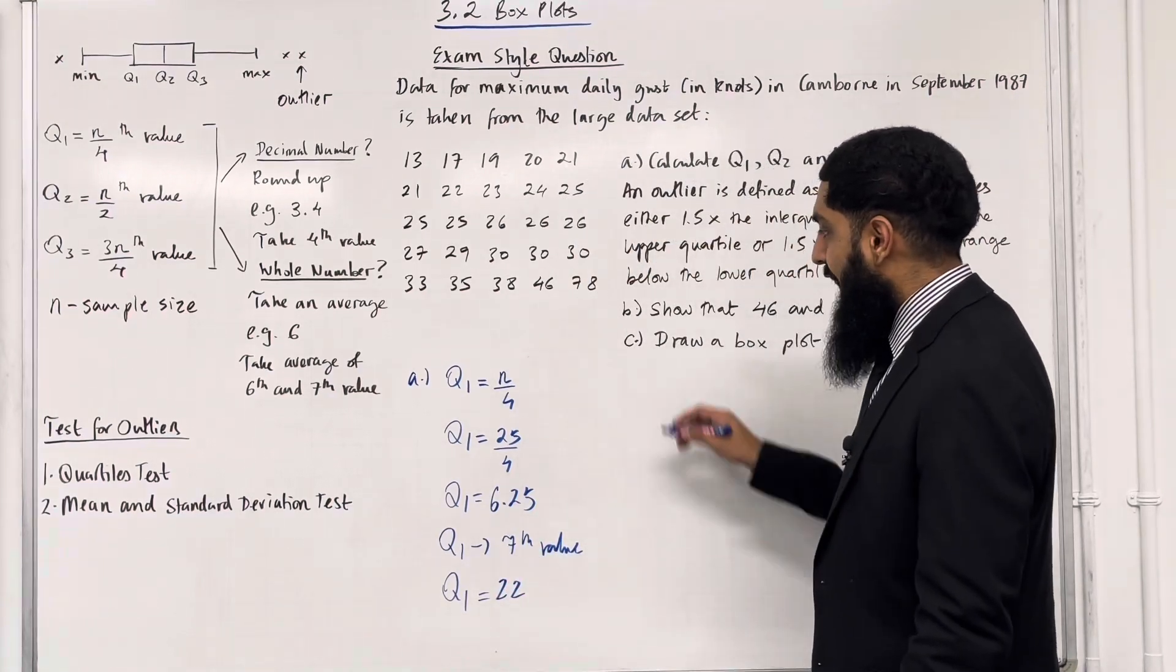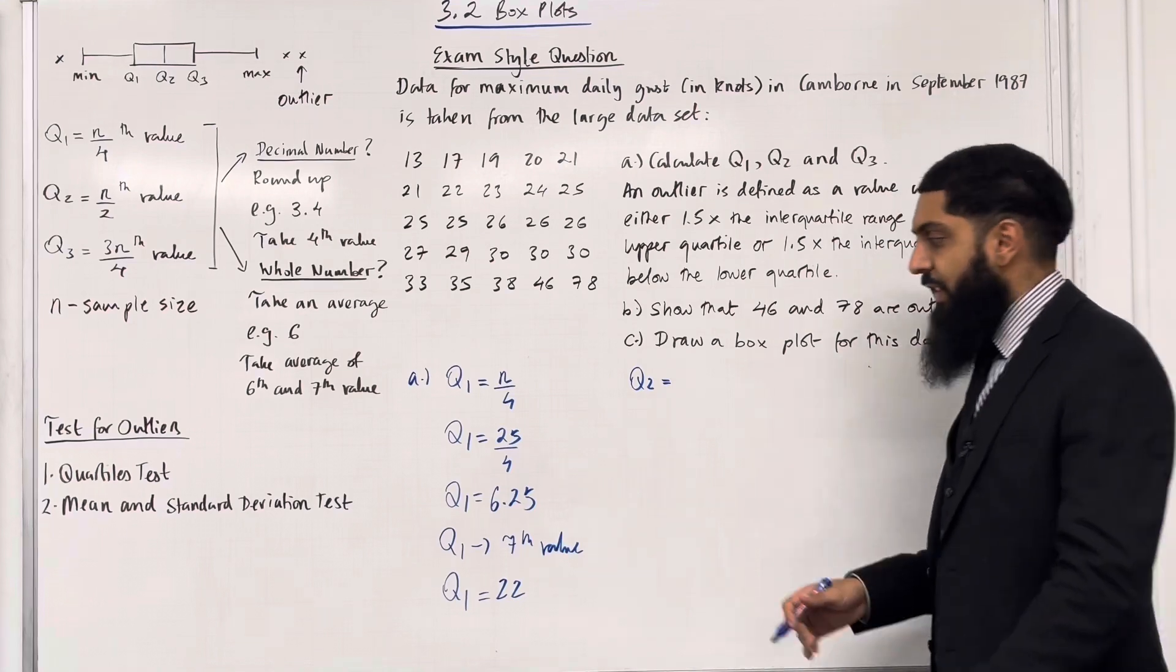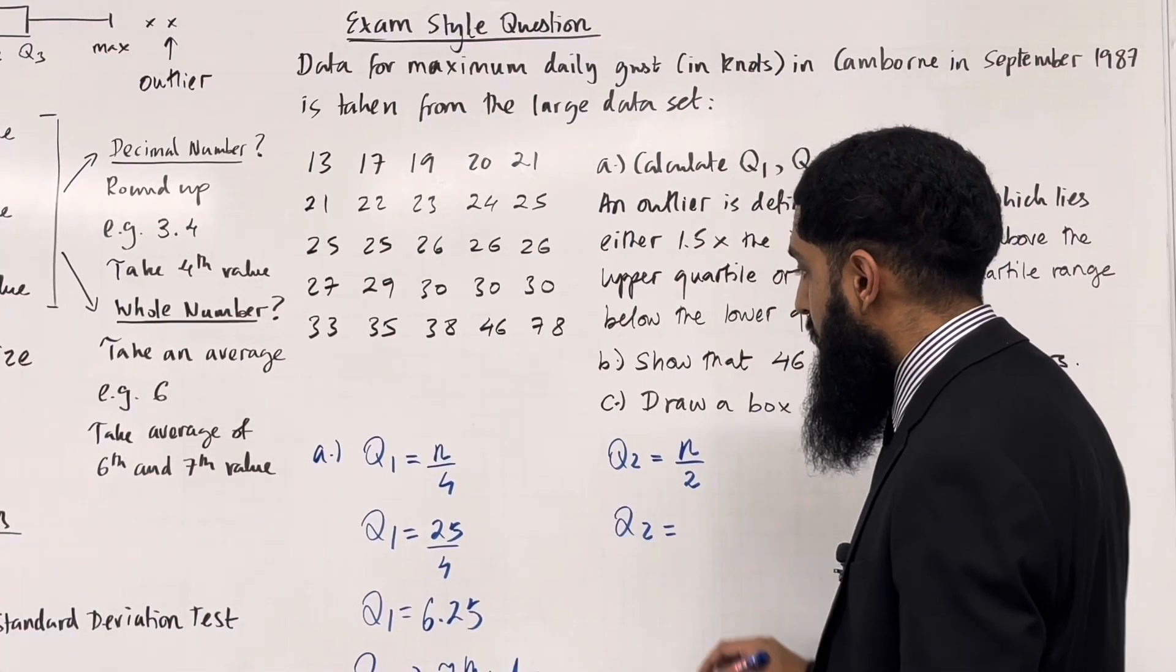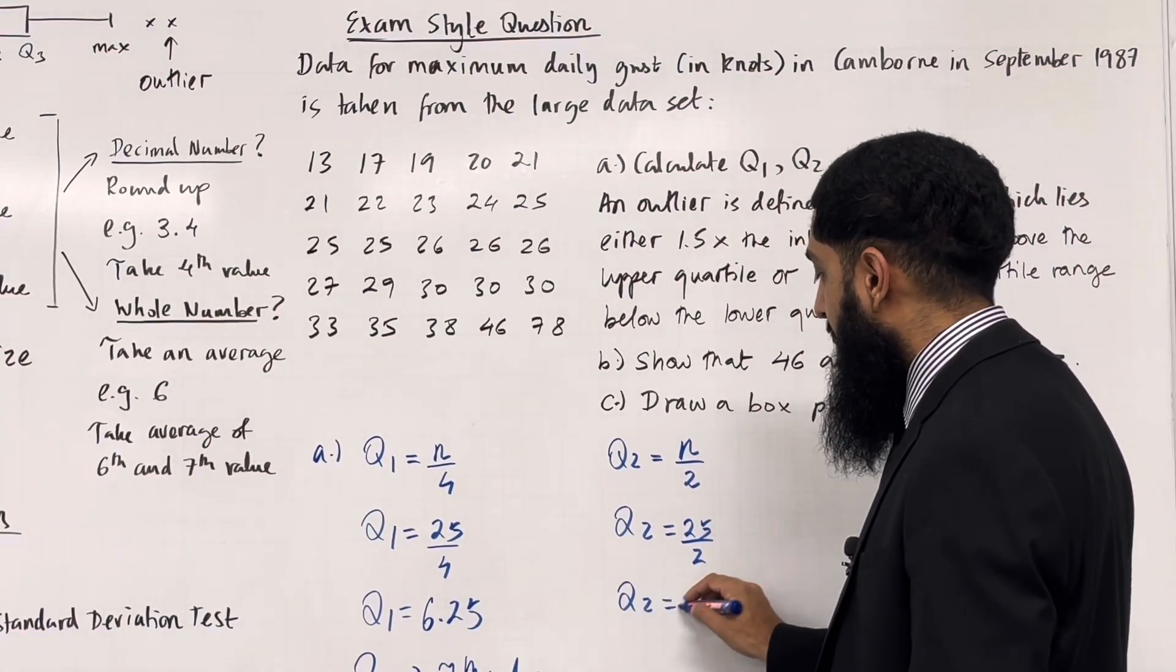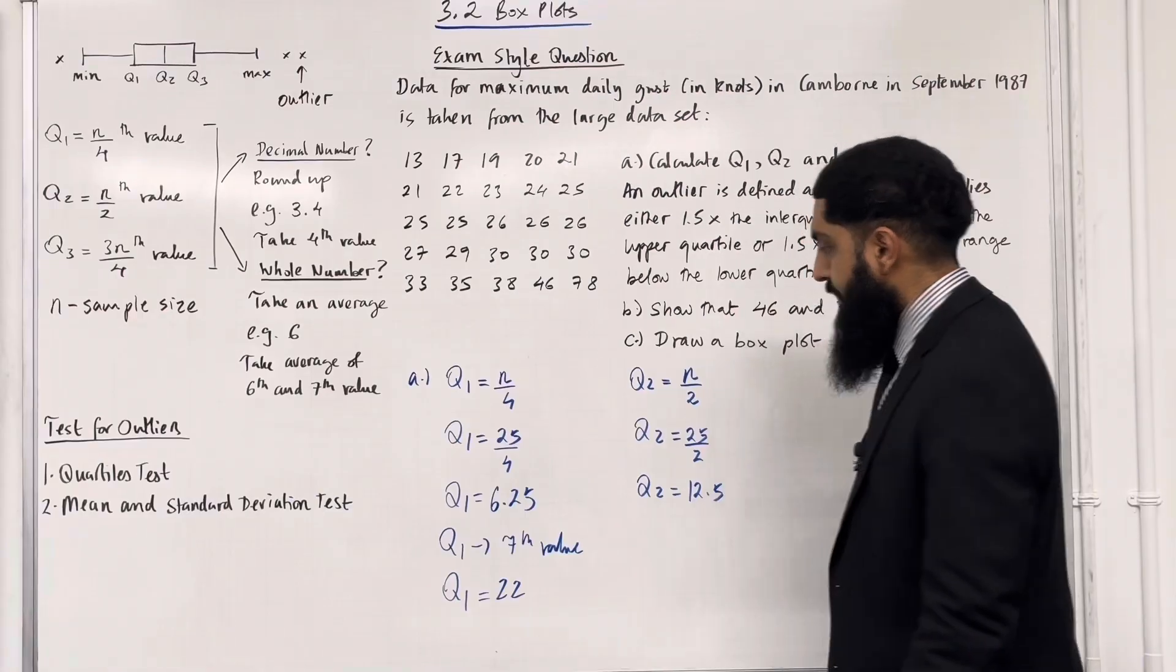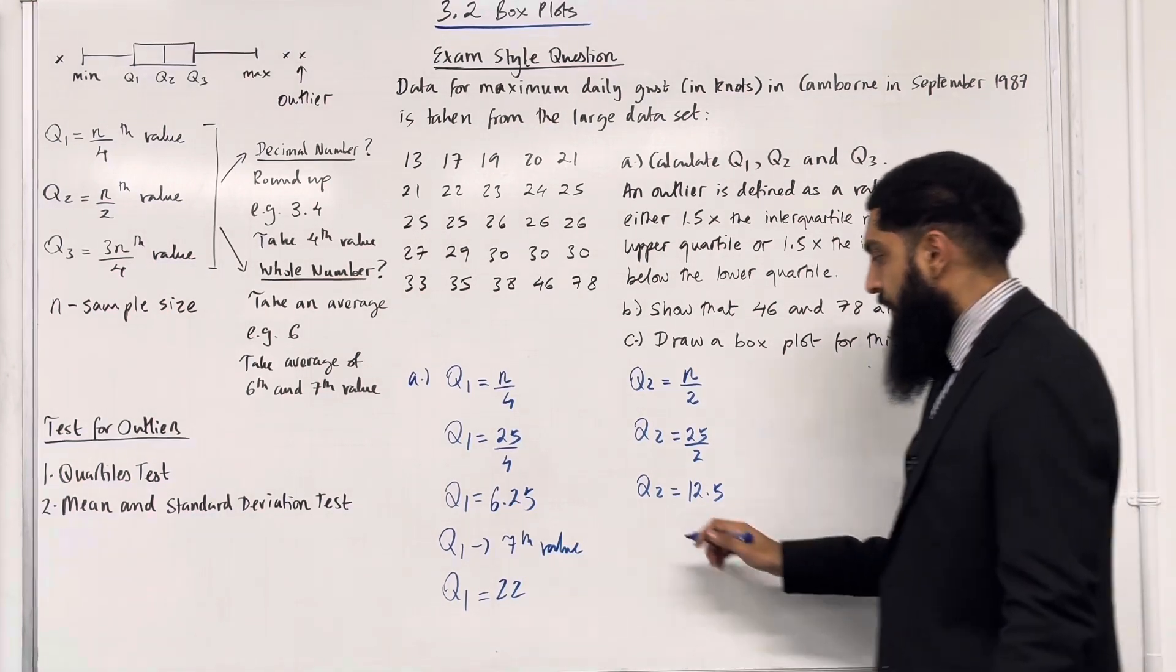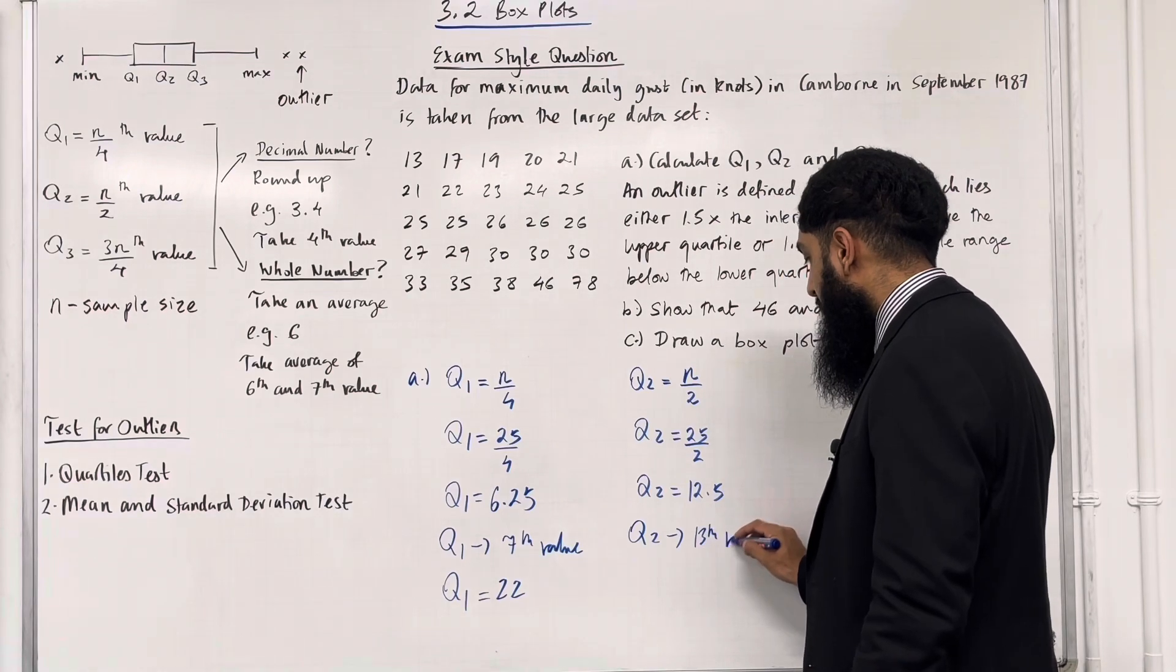Now I'm going to calculate Q2, the median. Q2 is given by n over 2, so Q2 equals 25 over 2, which equals 12.5. This is a decimal number, so we round up. Therefore Q2 is the 13th value.